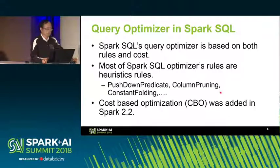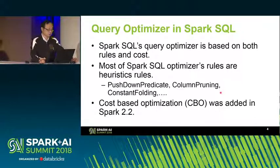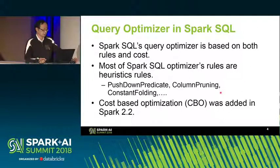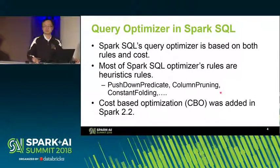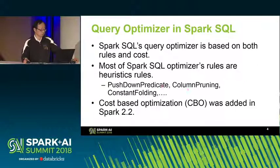As for the query optimizer in Spark SQL, it is based on both rules and cost. Today, Spark SQL has probably more than 50 rules, and most of them are heuristic rules based on experience. For example, push-down predicate — we basically want to push down the filtering condition in the query execution plan. We also want to prune out those columns that are not referenced in a user query.